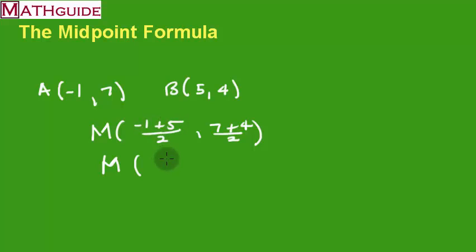If I add those, I'm going to get four. Four divided by two is two. If I add these, I get 11. 11 divided by two is 5.5. And there you have it. So, I found the midpoint of segment AB.